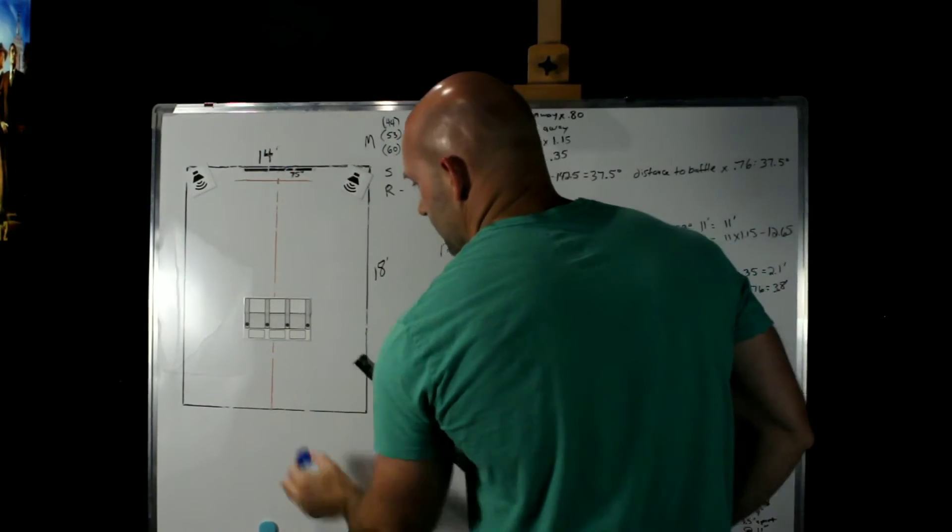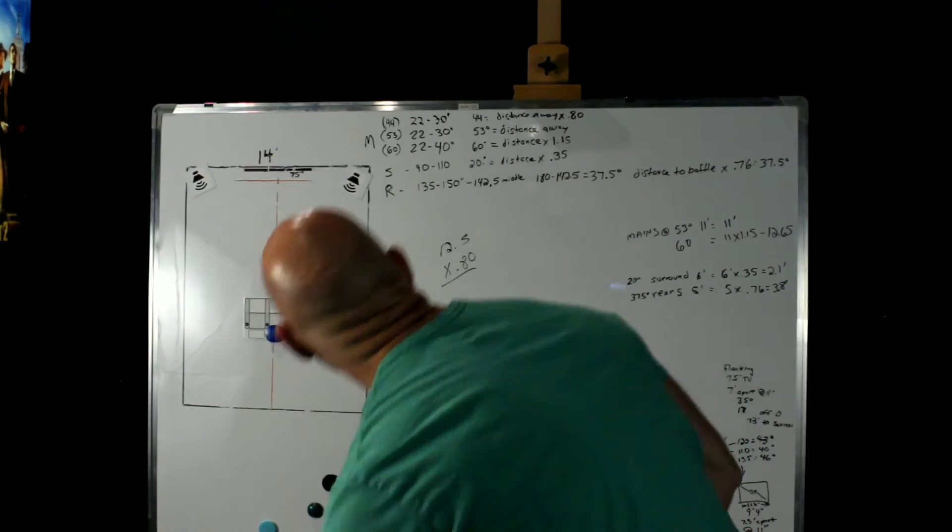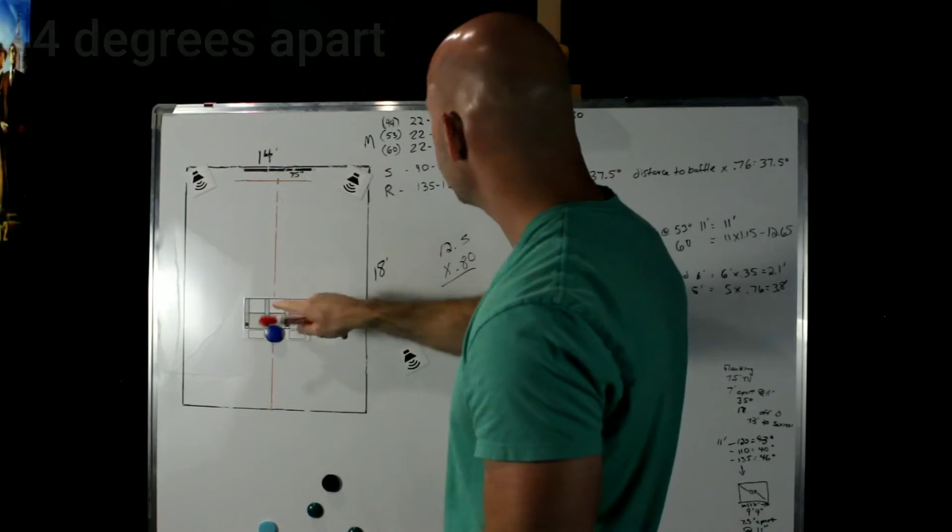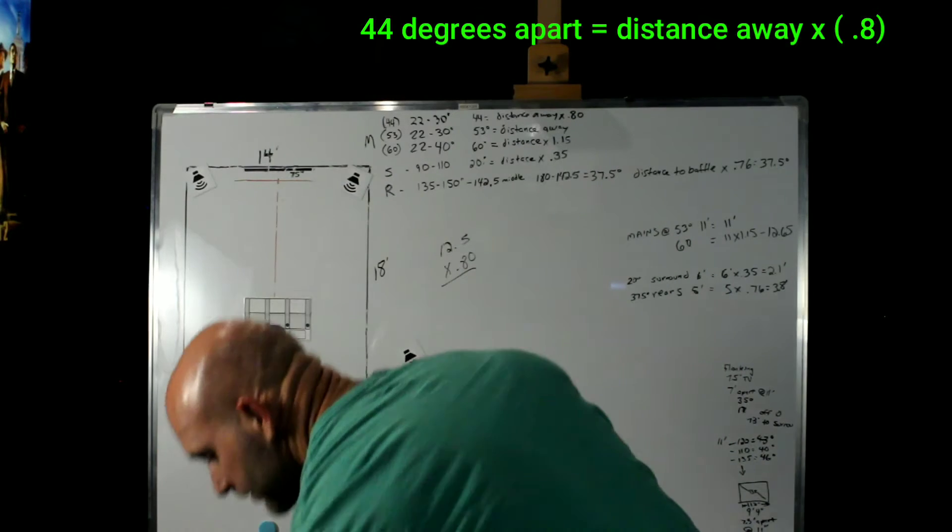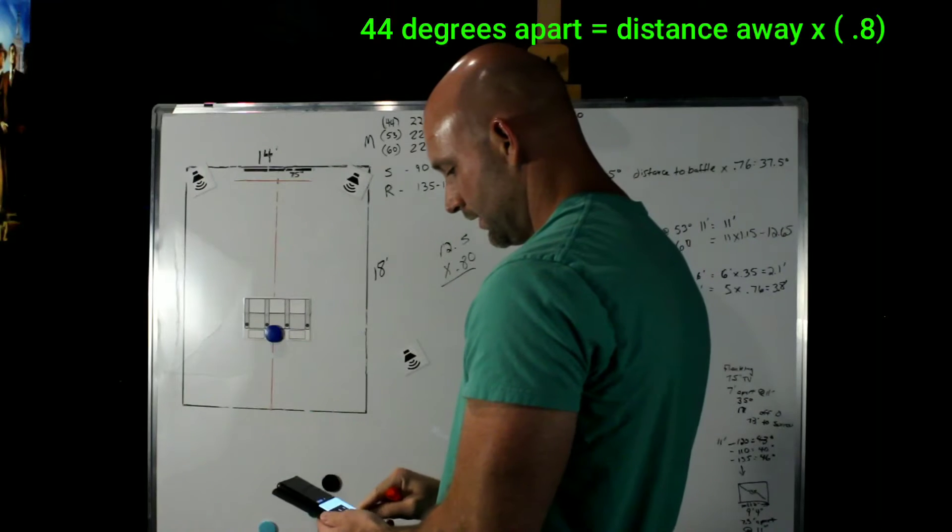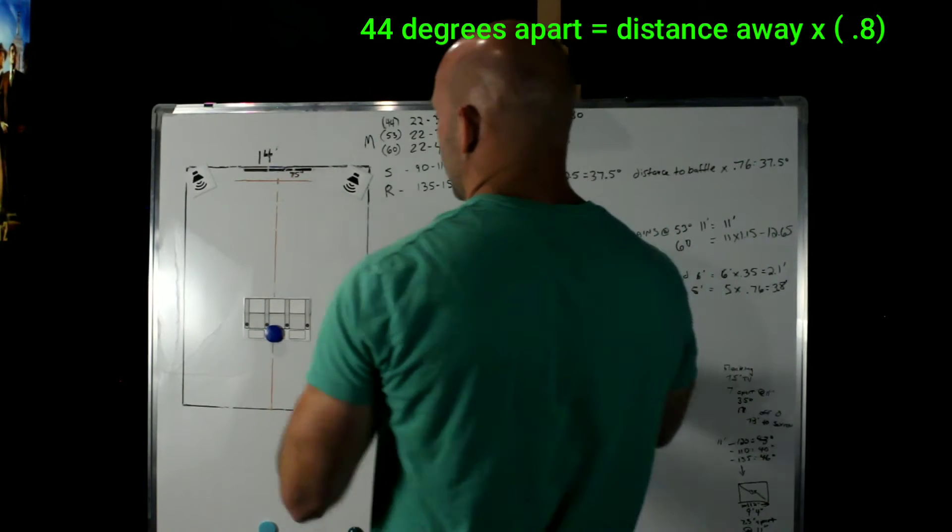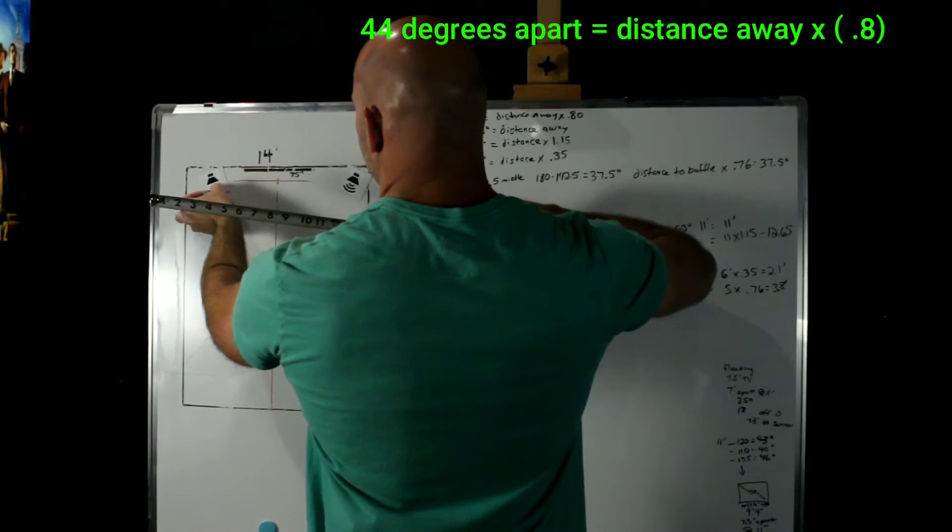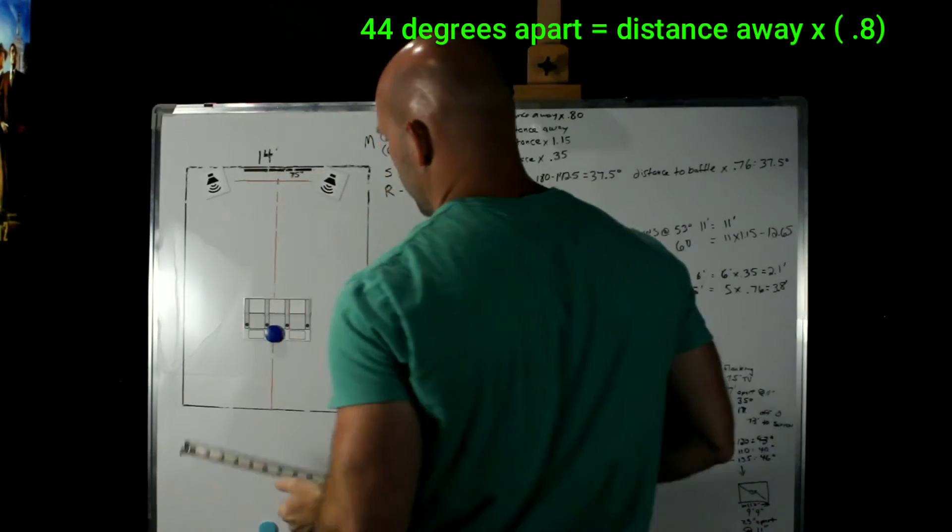So let's go ahead and scoot our chairs back 11 feet from that point. So our head is 11 feet from that point right there. Now, if we want to find 22 degrees, we're going to take this distance away from this point and we're going to multiply it times 0.80. And that's going to give us our distance. So 11 times 0.80 is 8.8 feet apart.